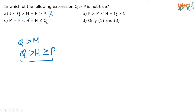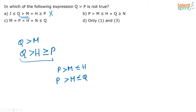Look at option B: P is greater than M, M is less than or equal to H. It is also given that H is equal to Q, so I can say M is less than or equal to Q, and P is greater than M. Can you say anything about the relationship between P and Q? You cannot. You cannot say Q is greater than P or less than P. You know P is greater than M and M is less than or equal to Q, but with that you cannot find the relationship between P and Q.